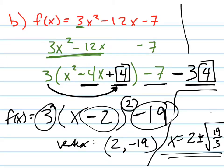So if you wanted to graph it, your vertex is at 2 negative 19. It's like way down there. And 19 over 3 is about 6 point something. So the square root of 6 point something is like 2 point something.